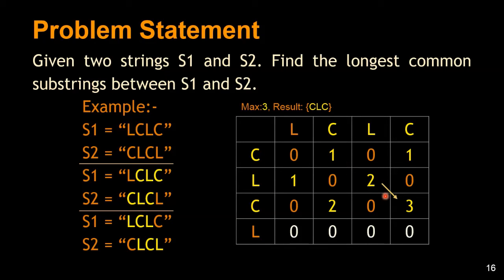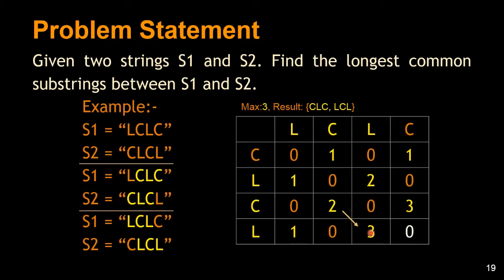We are doing matches along the diagonals and incrementing the counts along the diagonals, which helps us solve the problem. Moving to the last row, 'L' matches here but the max is one which is not equal to the max we have, so we don't update the result set. In the next column there is a match and we again find a substring of length three. When we find the current longest substring, we update it into the result set.